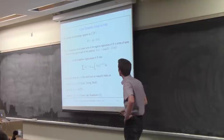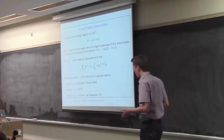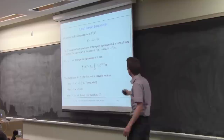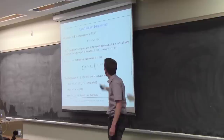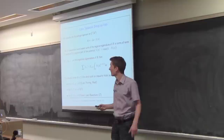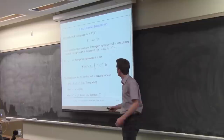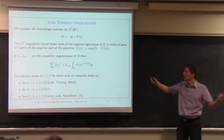The Lieb-Thirring inequalities concern the discrete spectrum of a Schrödinger operator. The operators I'll talk about will always be Schrödinger operators: there is the Laplacian — the sum of second derivatives — with respect to a variable x in R^d. The Hilbert space is L^2, the square-integrable functions in R^d. In physical applications d will always be 3, sometimes 2. You then perturb this Laplacian by a local potential V(x), a multiplication operator on L^2.